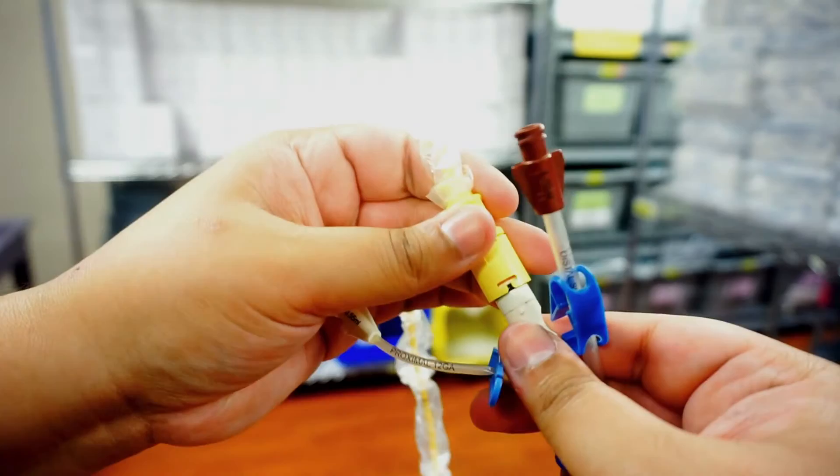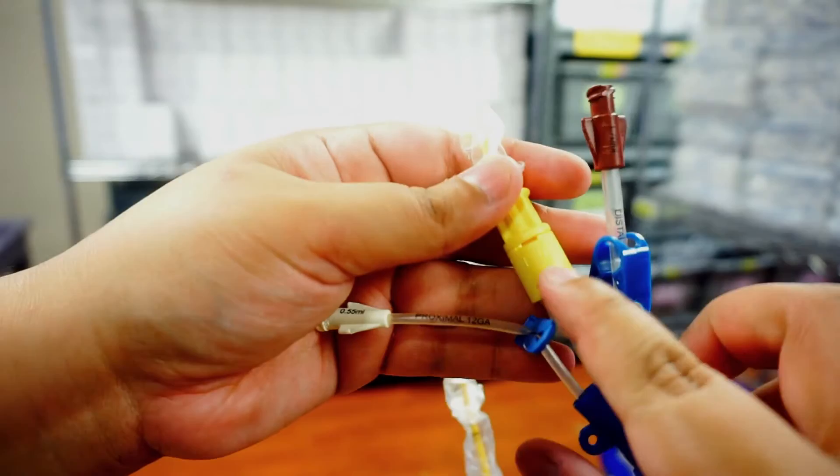I'm going to go ahead and lock it back in place. So that's an important thing. If this isn't locked in place, then your Swan could potentially come out.